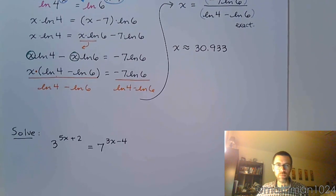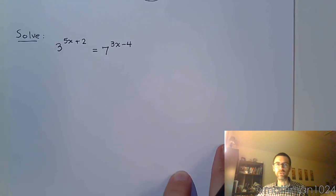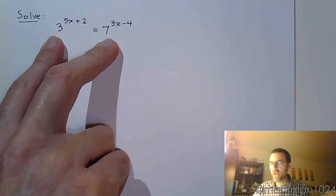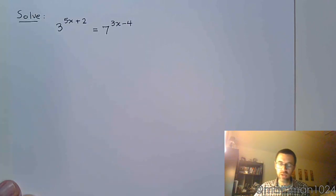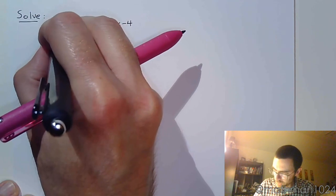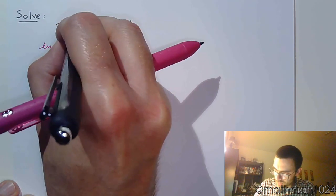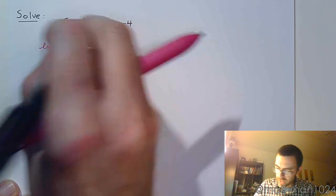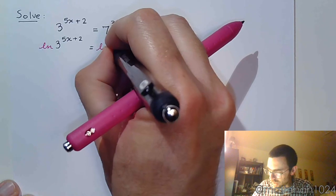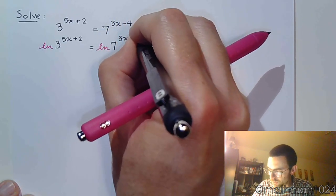Alright, let's do one more guy. Oh my goodness, this is gross. What are we going to do? Well, since we have variables in the power, and 3 and 7 don't have a common base, we need to take the log of both sides. Common log, natural log, it doesn't matter, but it has to be the same. So I'm going to do the natural log like I've been doing. So ln(3^(5x+2)) equals, let's do the natural log over here, ln(7^(3x-4)).